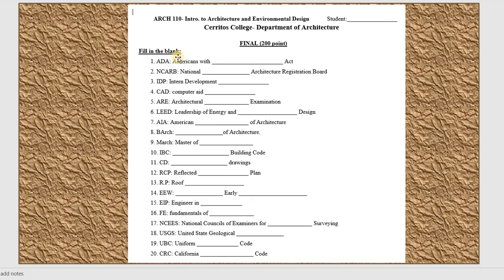This is a fill-in-the-blank section. I have 20 questions. The abbreviations you should know include: ADA, NCARB, IDP, CATE, AREE, LEED, AIA, BCA, MArch, IBC, DRC, P/R, FENCE, UHESUBC, CRC. These are the types of acronyms and abbreviations covered in the fill-in-the-blank portion of the final.